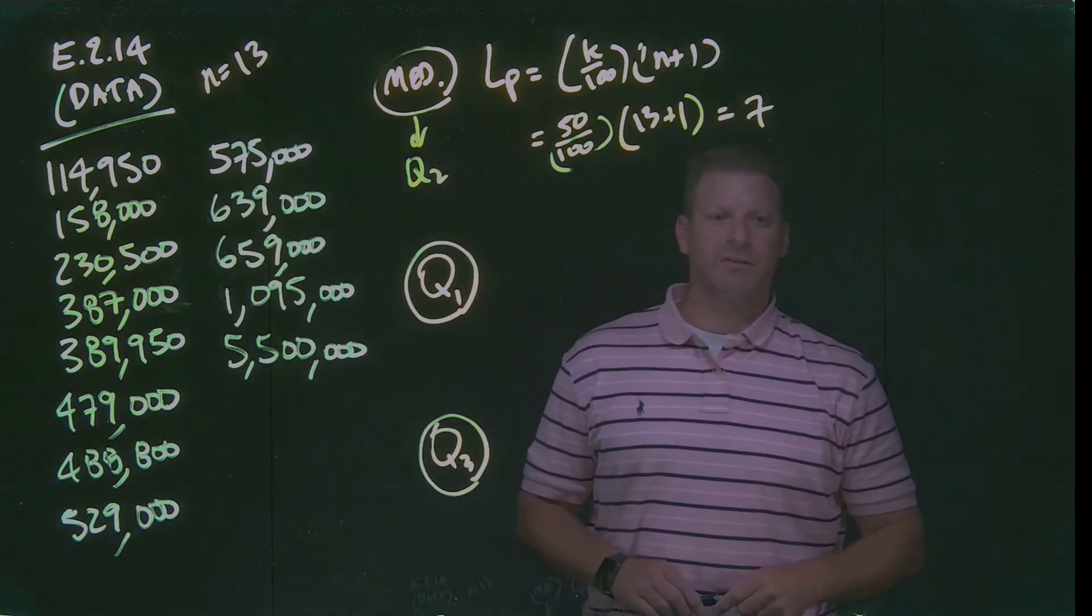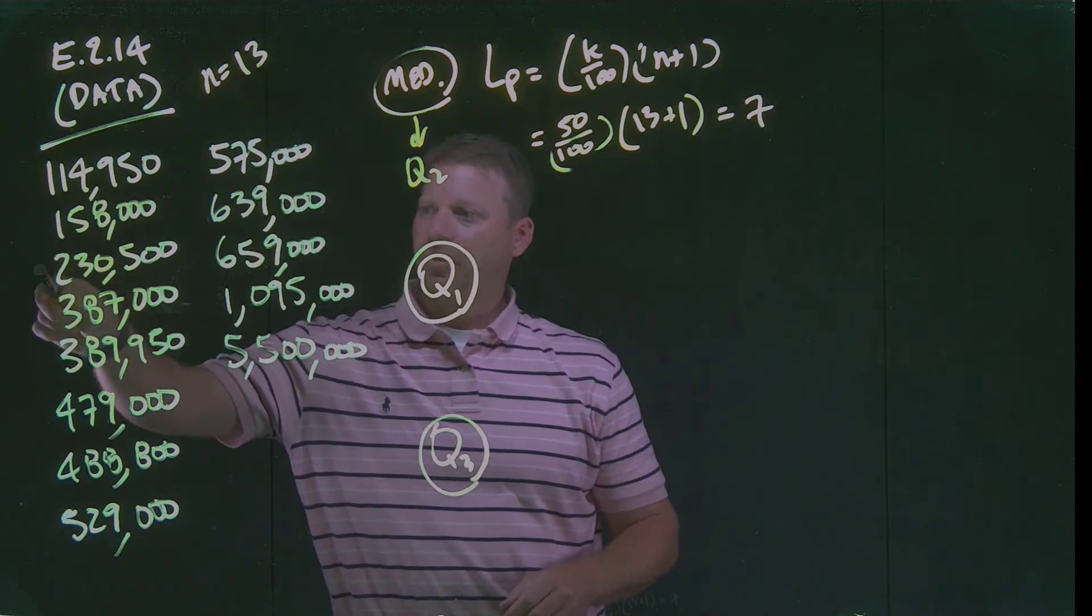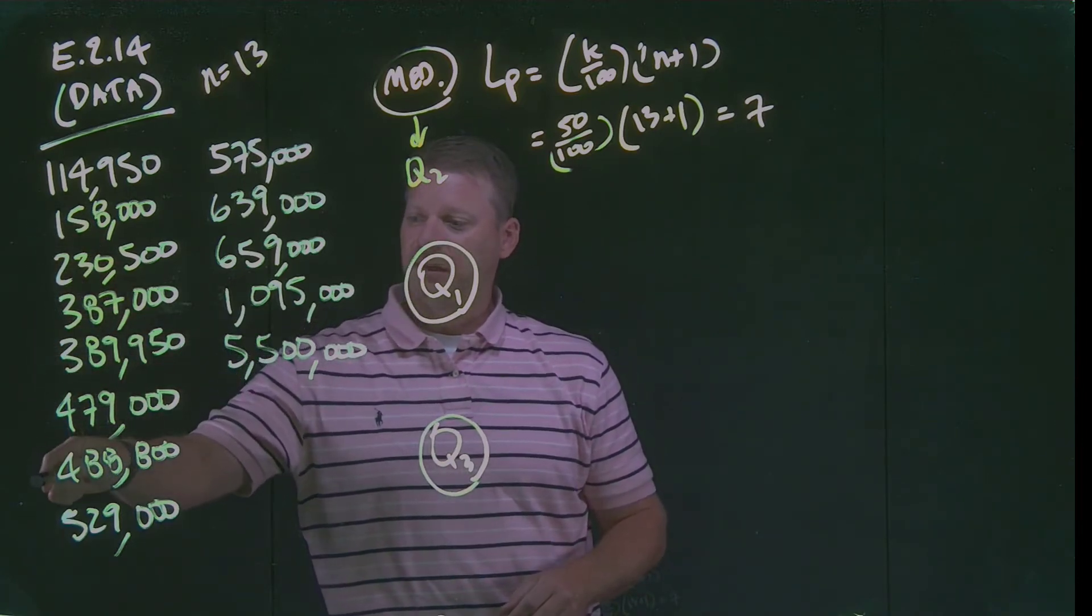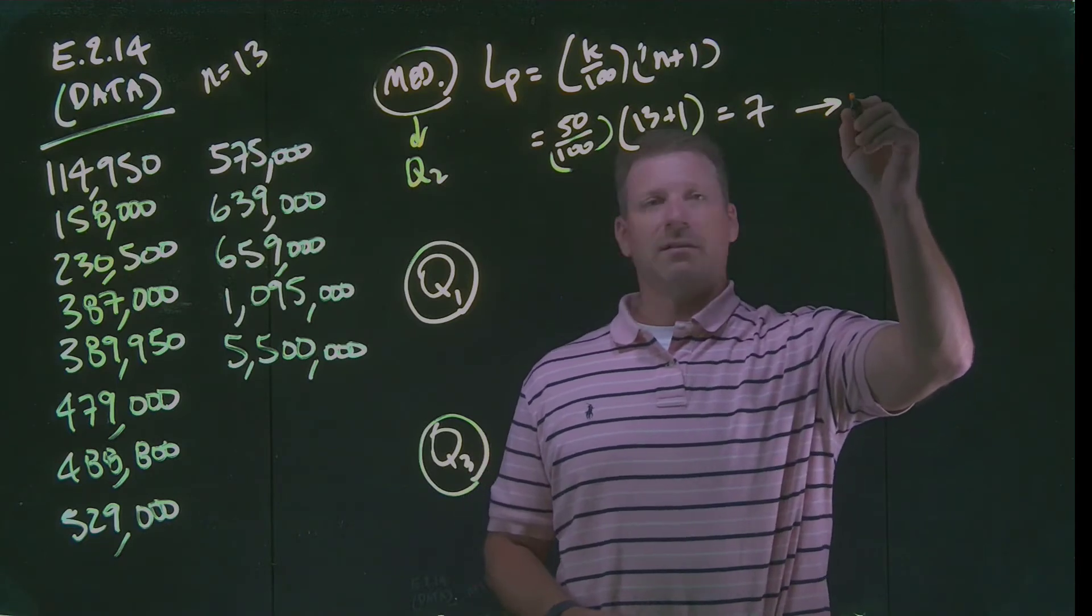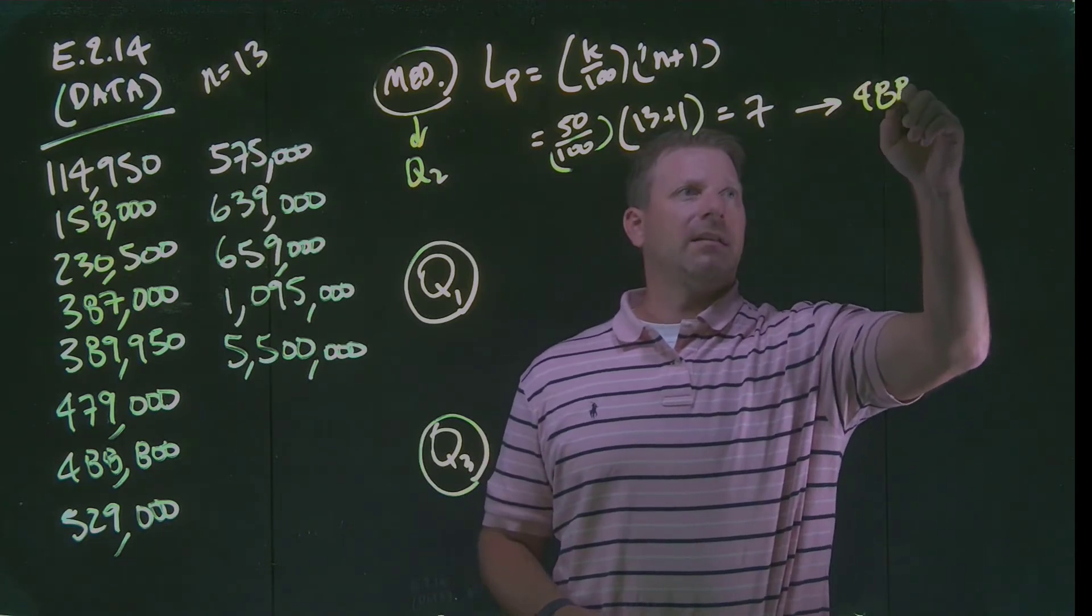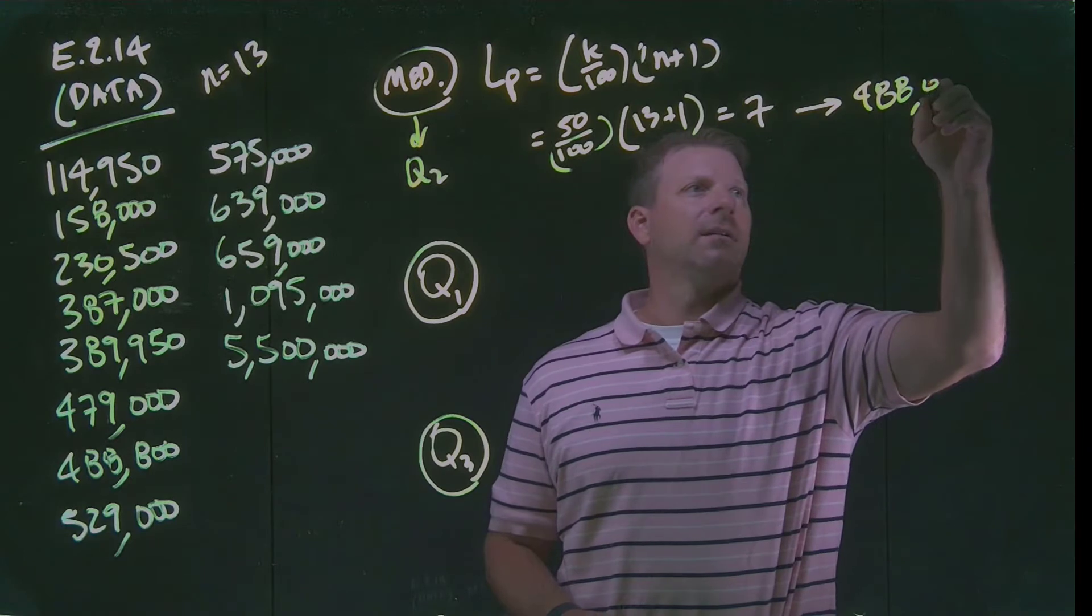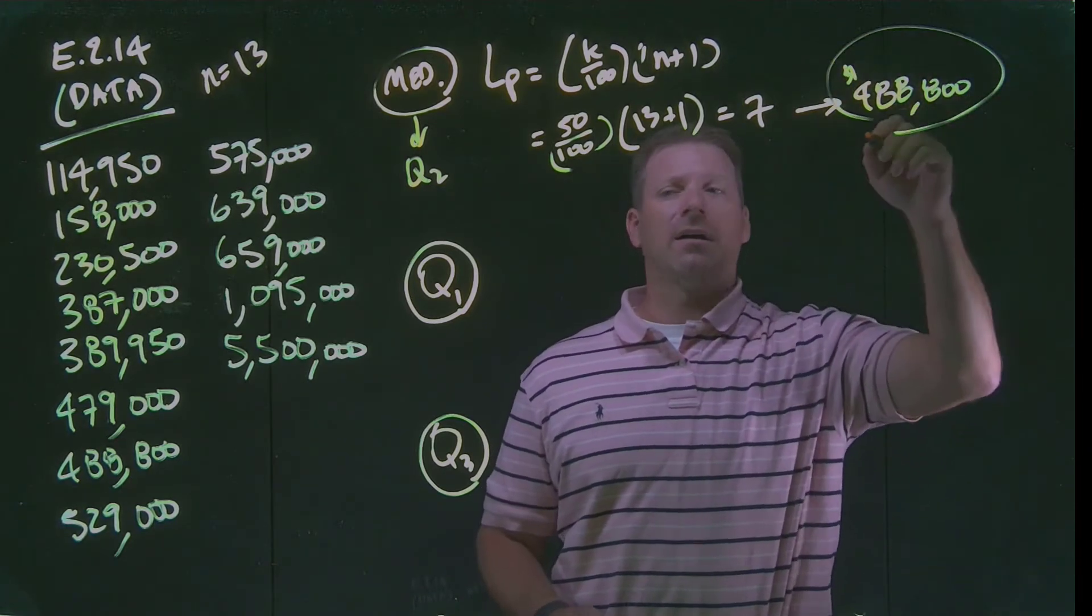This does not mean that our median real estate price is $7. What this tells us is where to find that. 1, 2, 3, 4, 5, 6, 7. This tells us that our median value is $488,800. That is our median value.